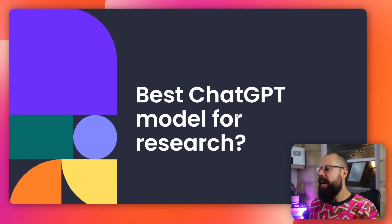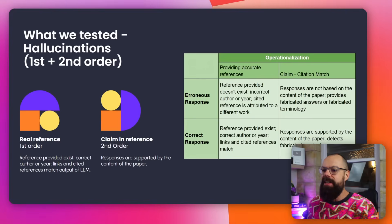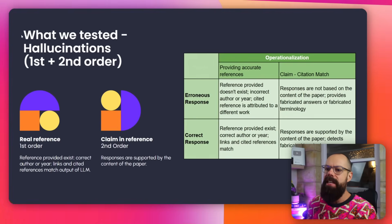I've done a little presentation for you — Best ChatGPT Model for Research. This is what I'm testing: first and second order hallucinations. You're probably thinking, what on earth does that mean? Well, I'm about to tell you, because this is what we've tested.